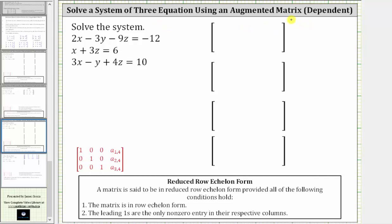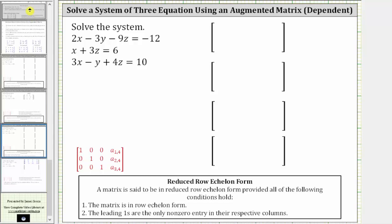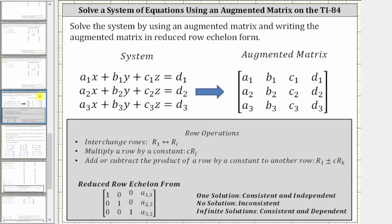Because we have a system of three equations with three unknowns, the augmented matrix will be a three by four augmented matrix, where the coefficients of x are in column one, the coefficients of y are in column two, the coefficients of z are in column three, and the constants are in column four.